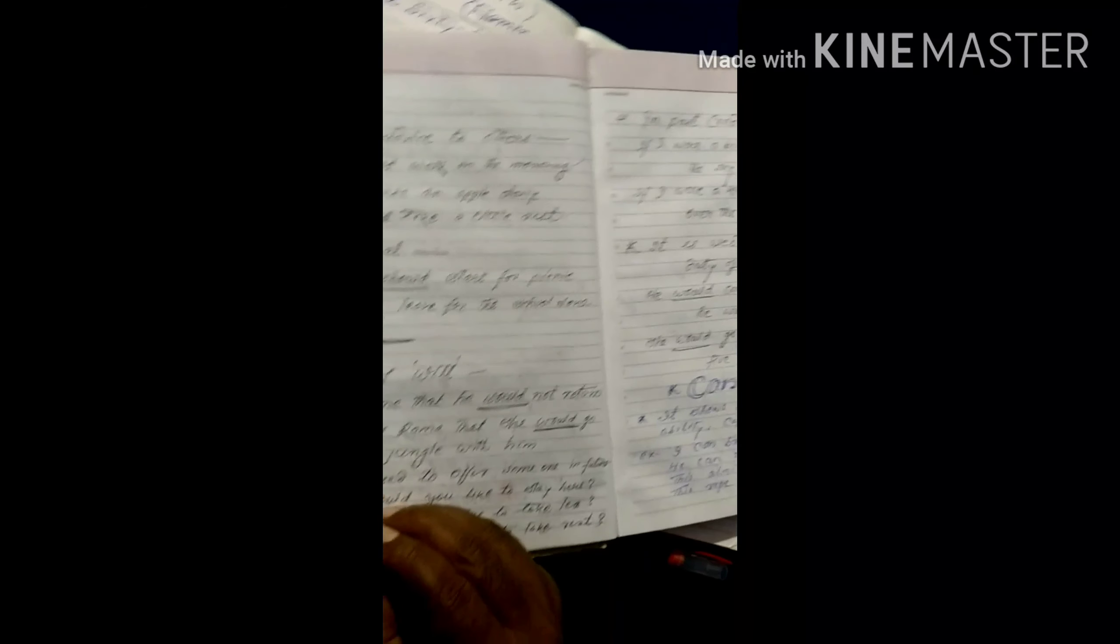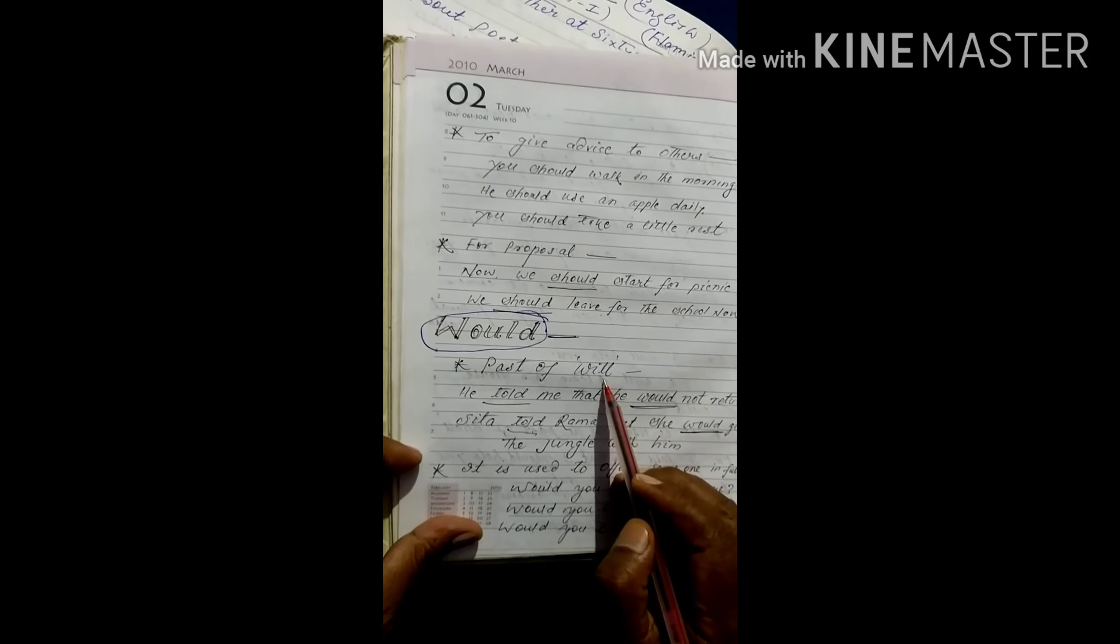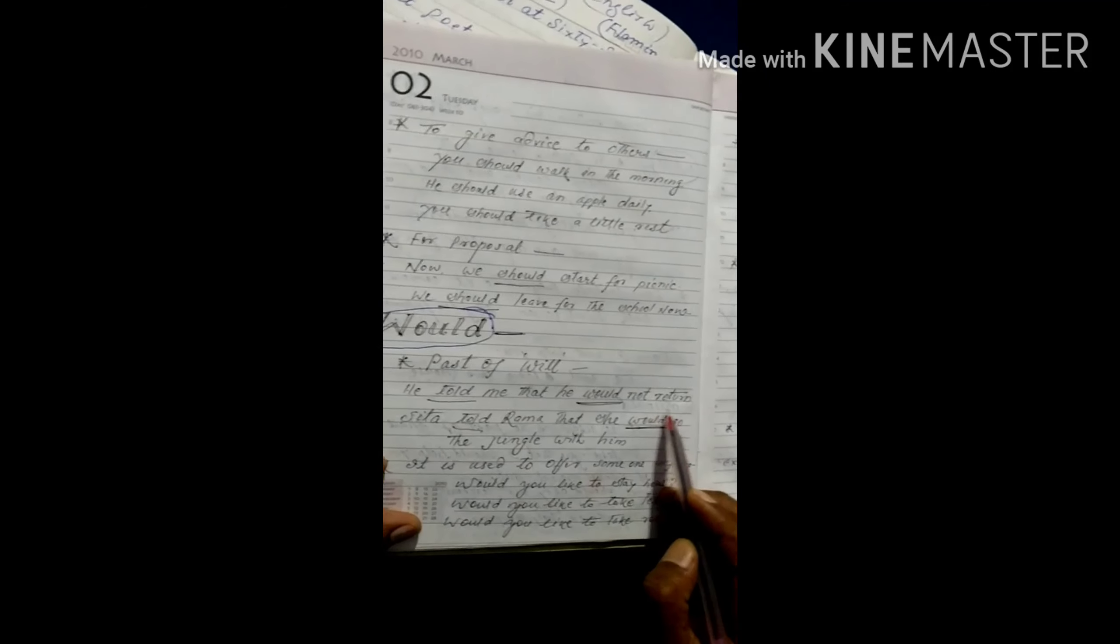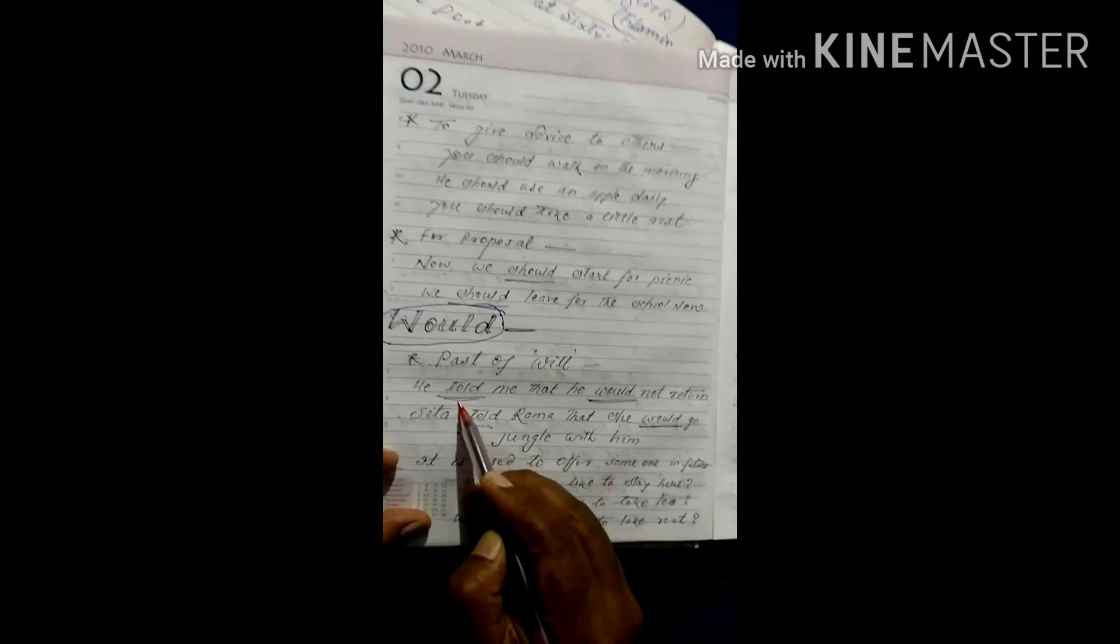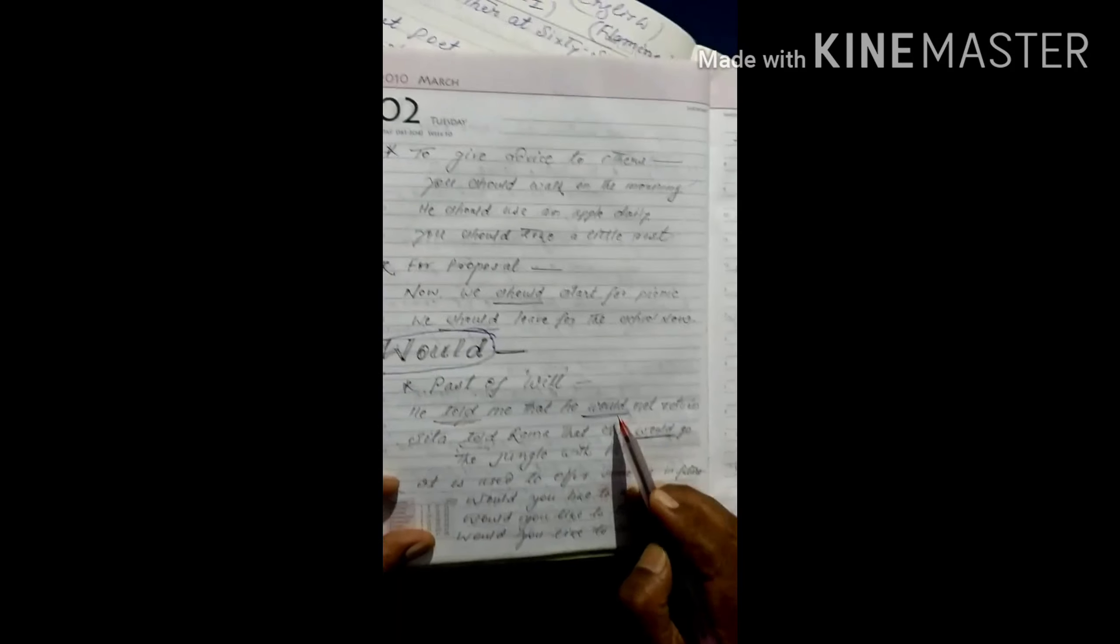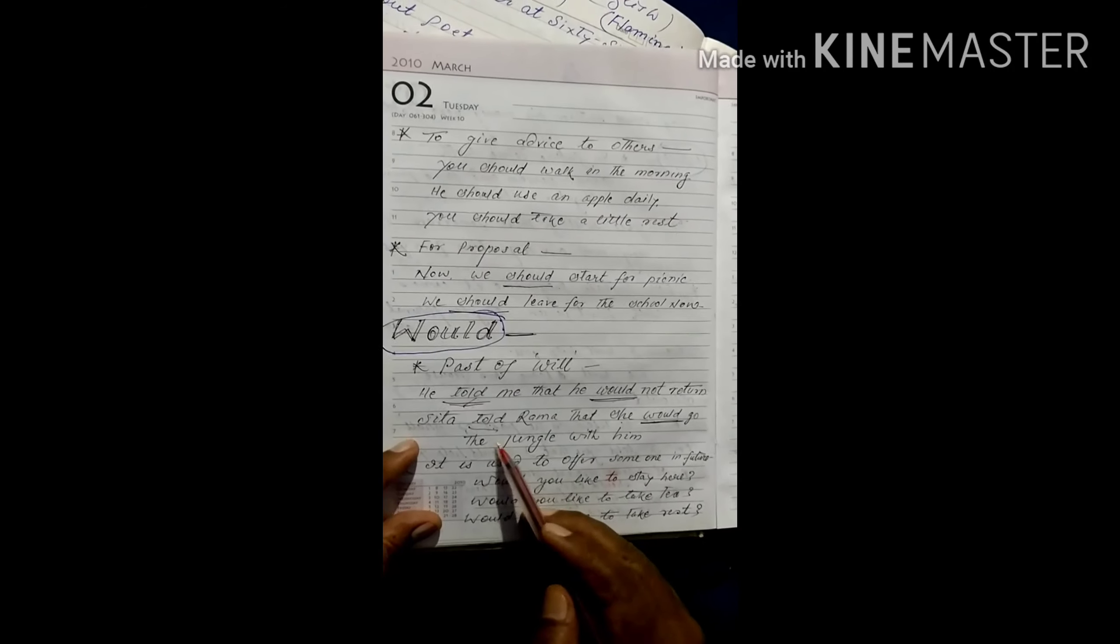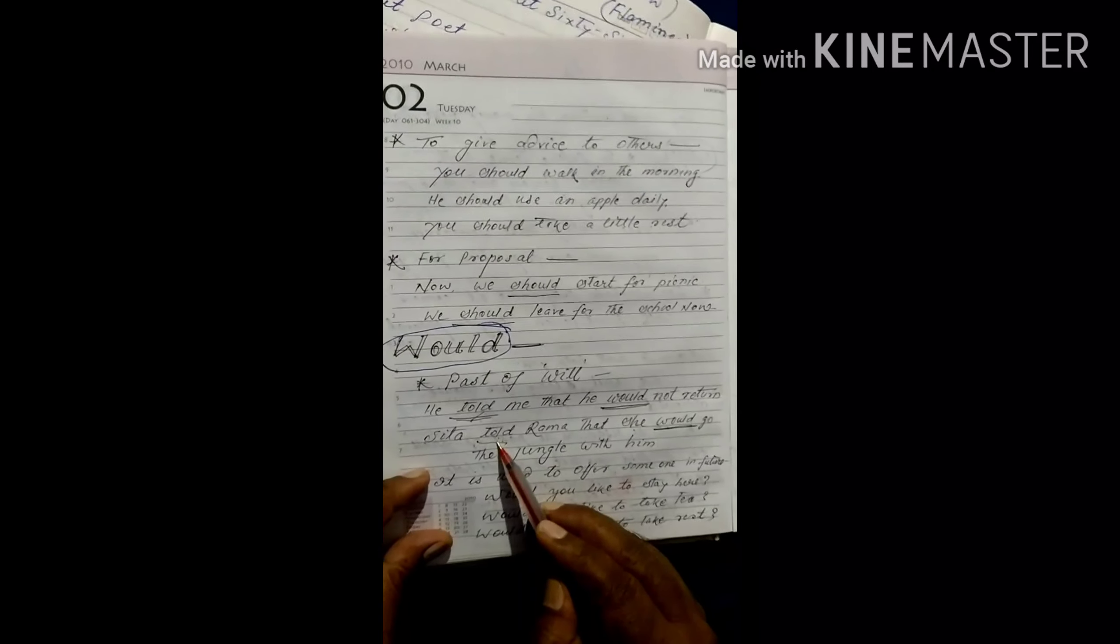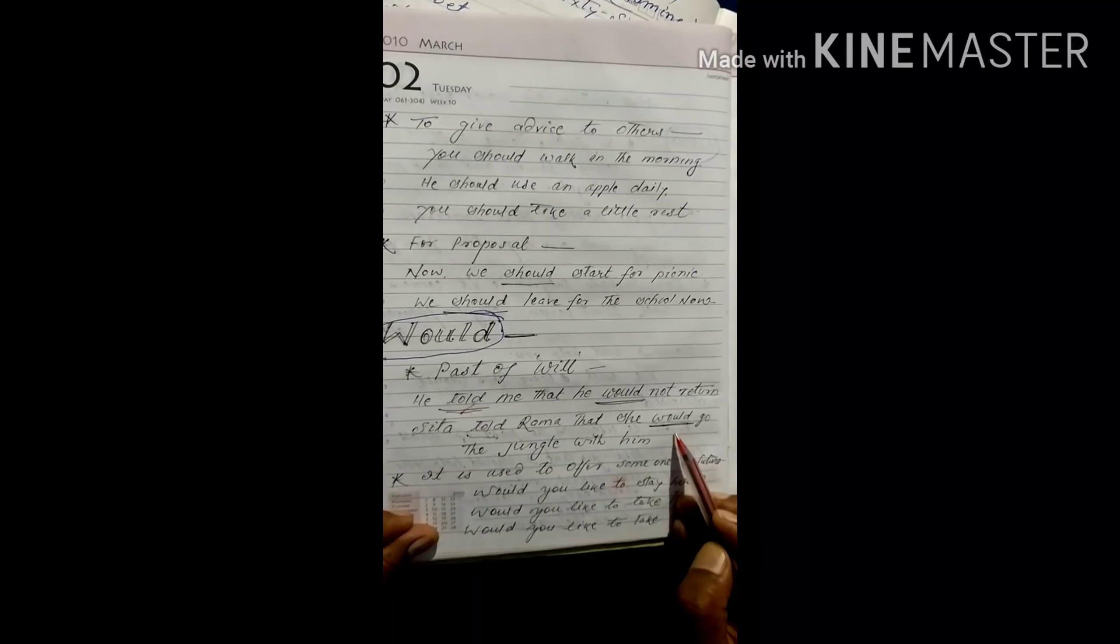Now, come to know about would. Would is the past of will. In present, in future, we use will word, but its past is would. For example, he told me that he would not return. Here, would is used because your tense is in past form. Told is in past form. So, the next clause is taking would. Second sentence: Sita told Rama that she would go to the jungle with him. Here, your reporting word is also in past tense. So, in further case, in place of will, we are using would.